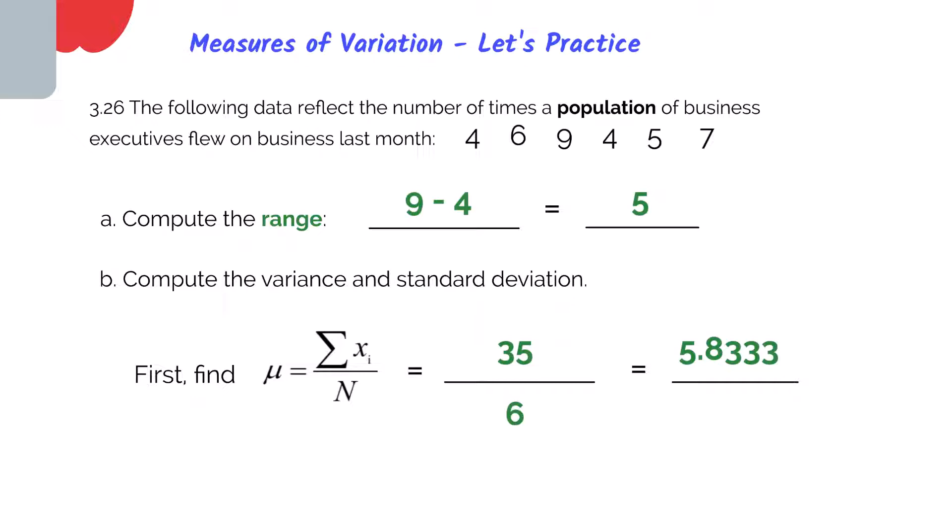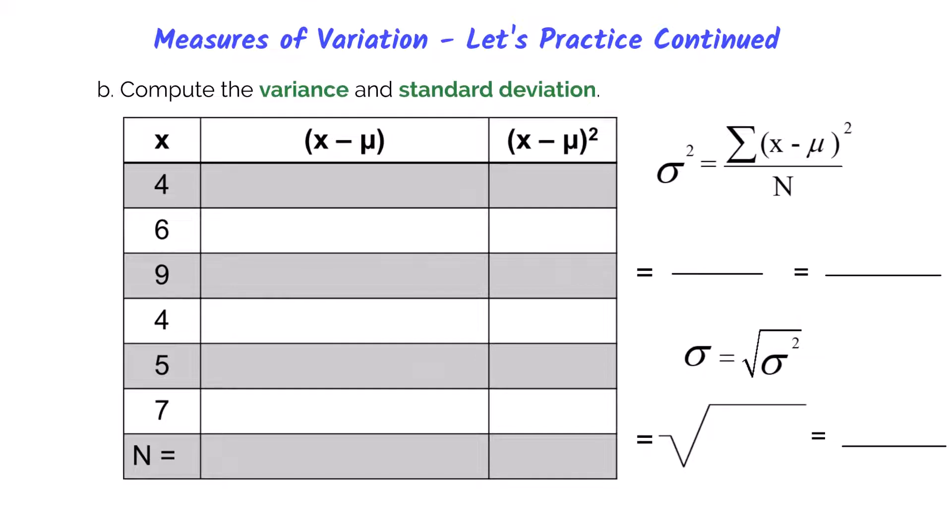So next, let's calculate our variance and standard deviation. When calculating the variance and standard deviation by hand, as we'll do in this example, I suggest using a table to make things easier. So the first thing we want to do is figure out our big N. So our population size is the six executives.